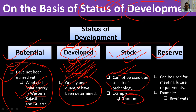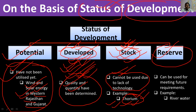Stock resources are those which exist but cannot be utilized because we do not yet have the technology to use them. For example, thorium found in Kerala in monazite sand — we have it but lack the technology to utilize it. So it is stocked there, and once the technology is available, we will begin using it.